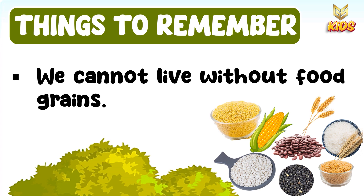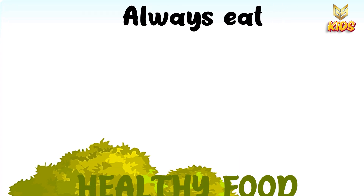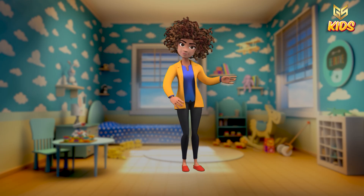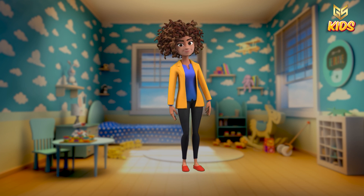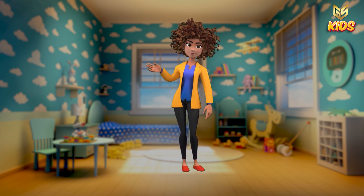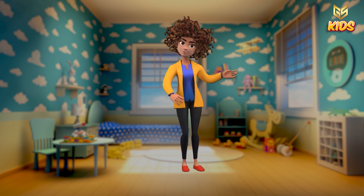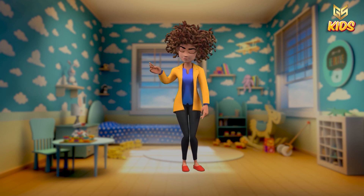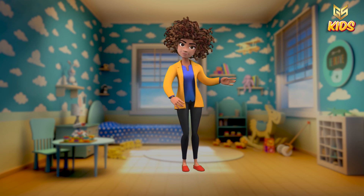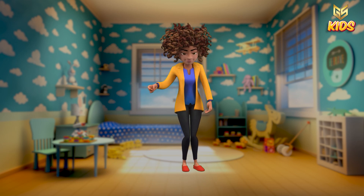We depend upon various food grains, so always eat healthy food and avoid unhealthy food. We have learned about various food grains — the names and types of food grains. We must always eat a healthy diet and avoid unhealthy food. I hope you have understood everything and learned the different types of food grains that we eat. Till then, take care and we will meet you in the next video.